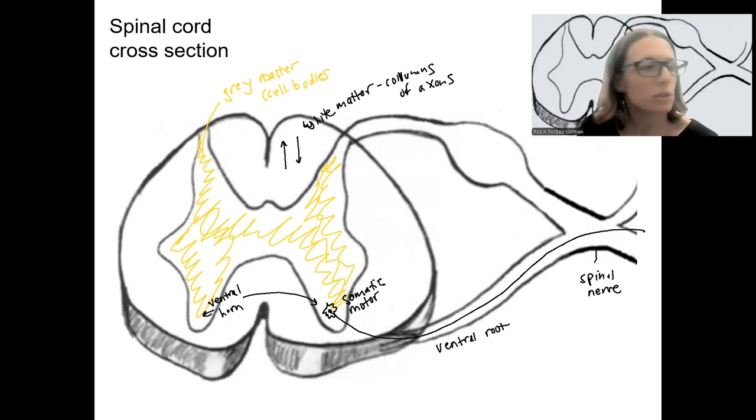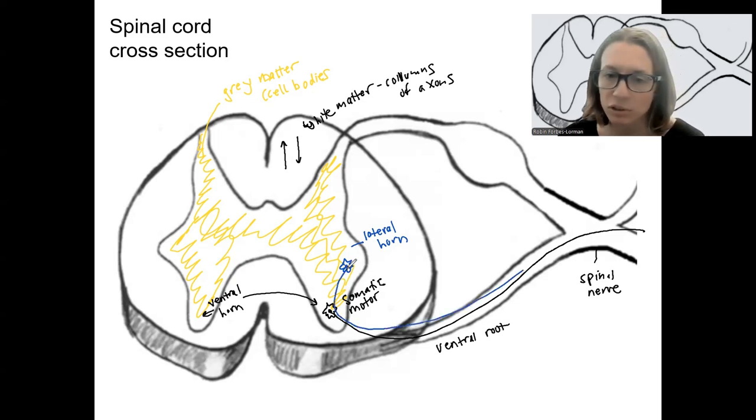Now that is in contrast to some of the other horns. So let's do the lateral horn next. Let's do this blue. So here is a lateral horn on the lateral side. It also controls motor information, especially the kind of the front part of it here has a multipolar neuron. It's also going to go out this ventral root.